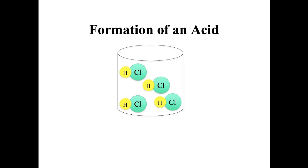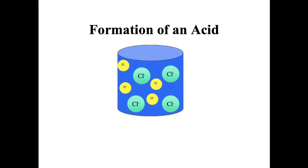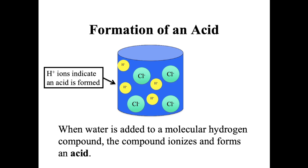However, if you take hydrogen monochloride and you put it in water, you will find that it ionizes and it separates into hydrogen ions and chloride ions. The presence of the hydrogen ions indicate that an acid has been formed. And this tends to happen when water is added to any molecular hydrogen compound. It ionizes and forms an acid.